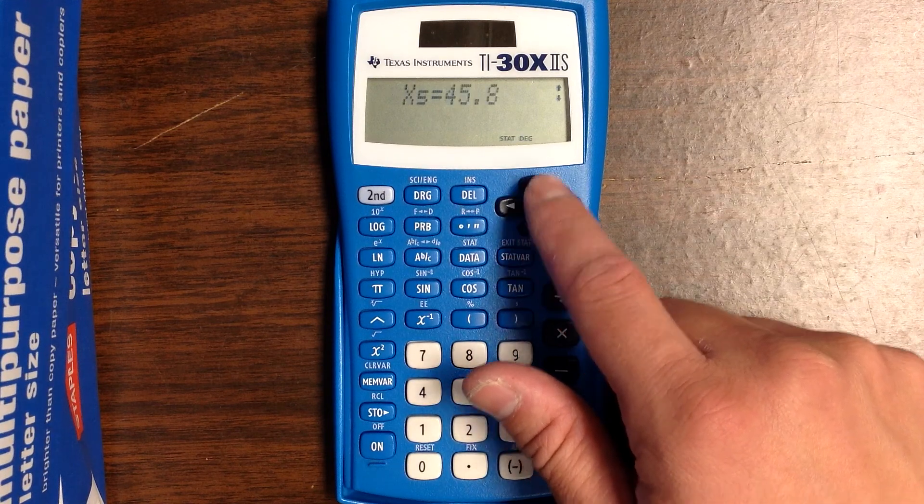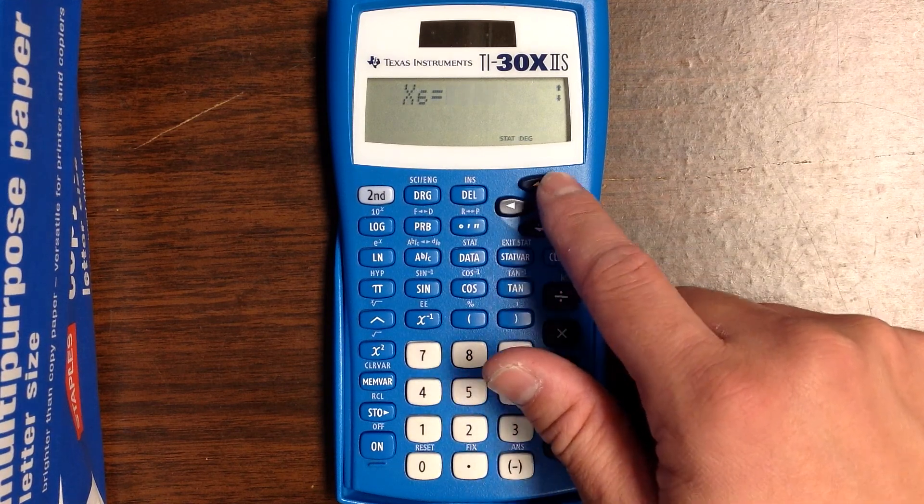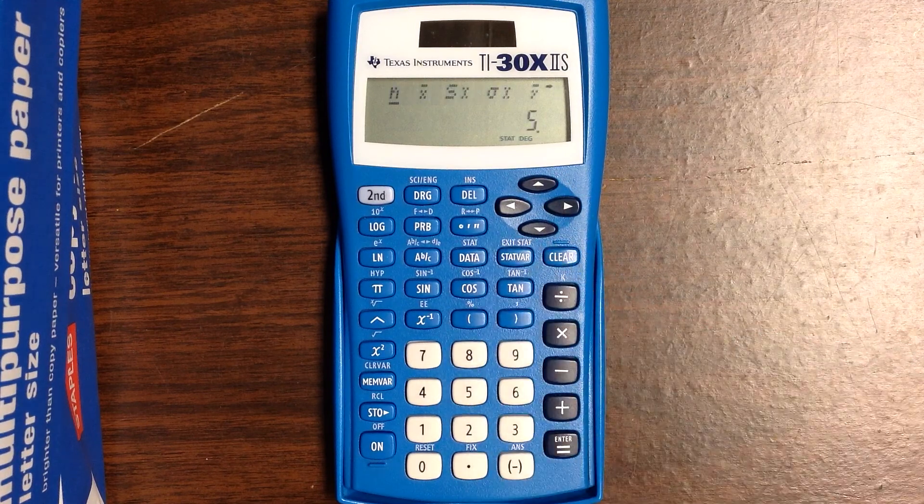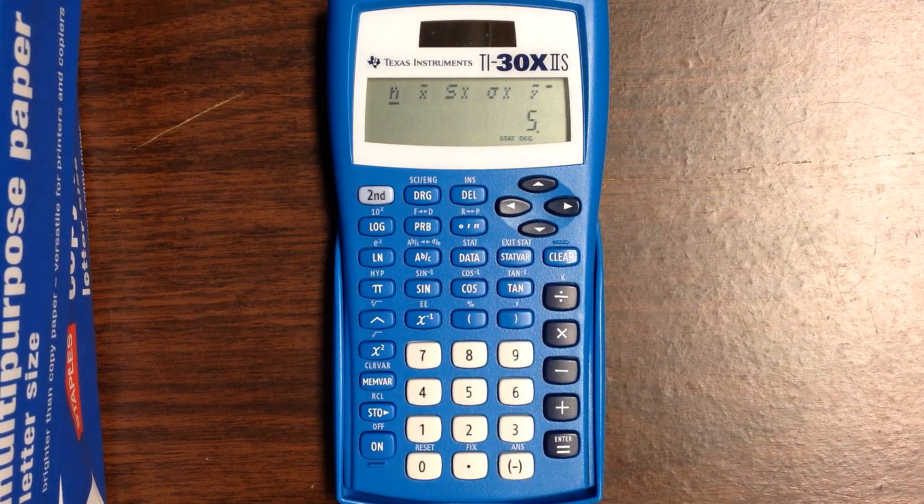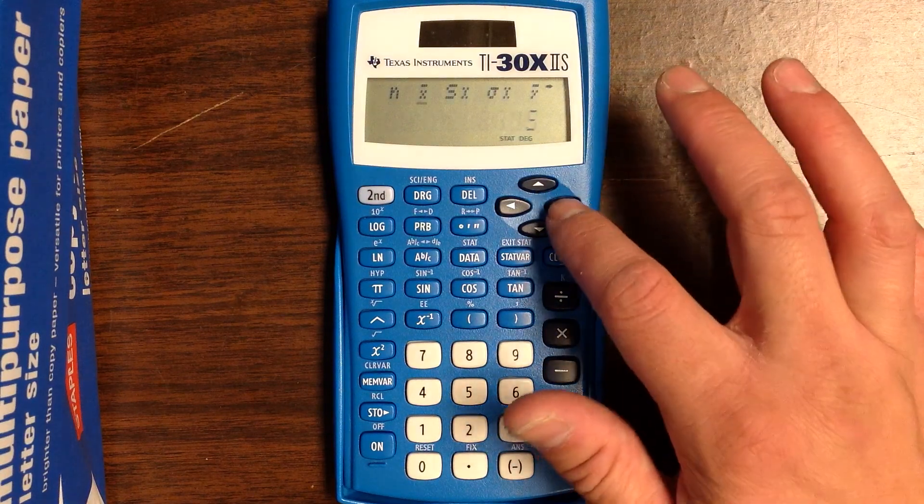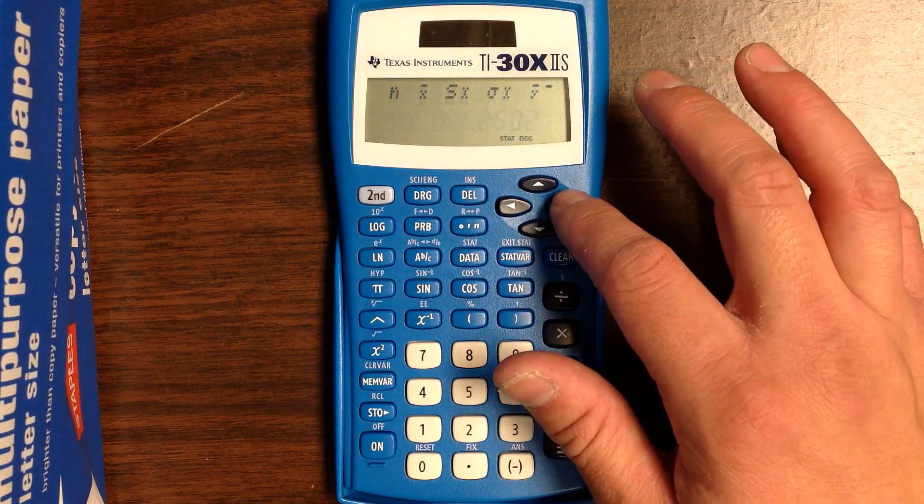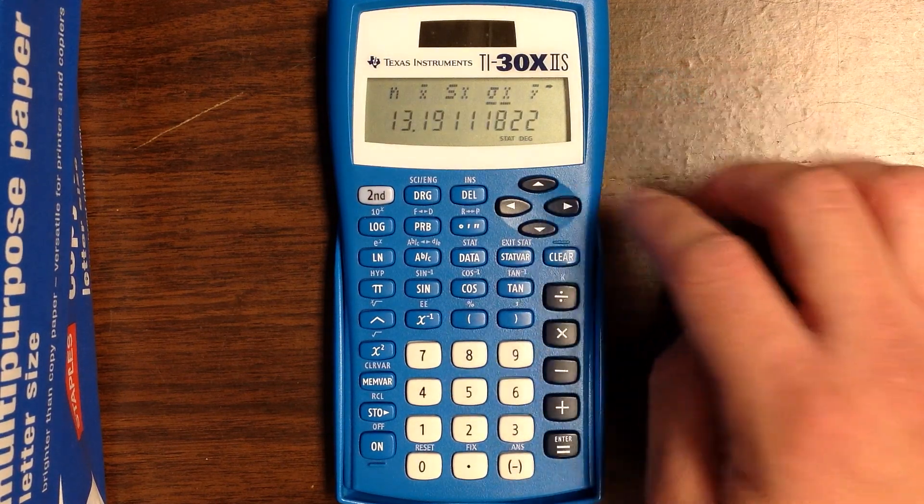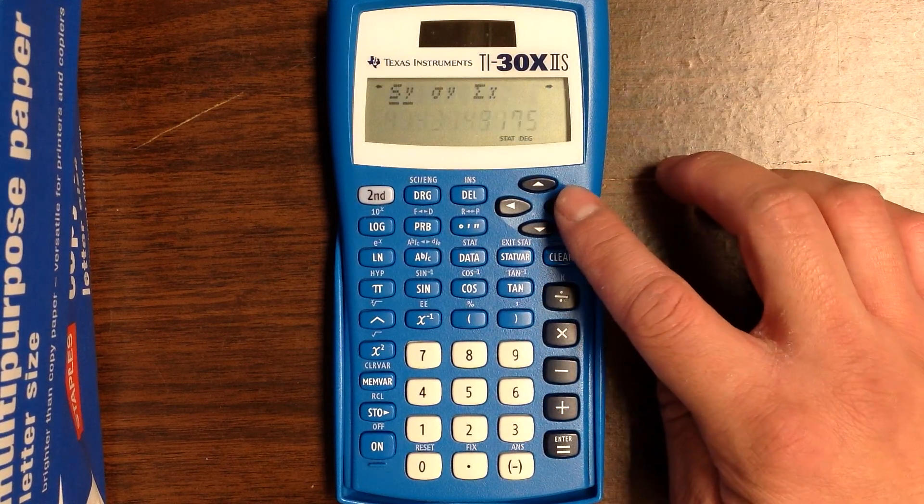When you're done, press stat bar. Stat bar will give you the summary statistics. N refers to how many data points you have. X bar is the mean for X, sigma X is the standard deviation of X, Y bar is the standard deviation of Y.